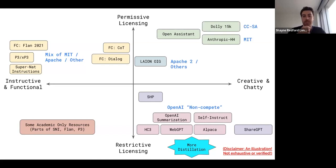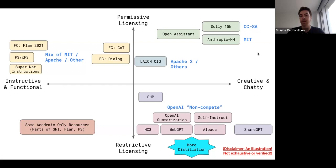In the top right-hand side, we see the underappreciated heroes, which have open-sourced their data — shown in green — such as Dolly's 15K instructions, which have a similar distribution to InstructGPT, some of the Anthropic datasets, and Open Assistant datasets, which have more lenient licensing like CC-SA or MIT. Parts of the LionGuard open instruction generalist compilation of tasks are also here.